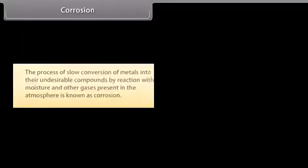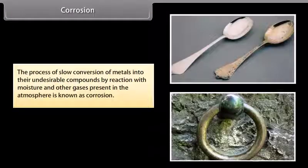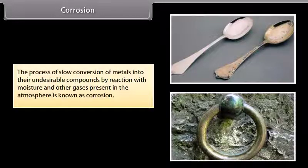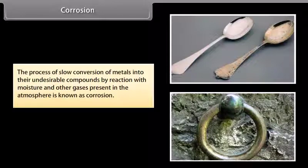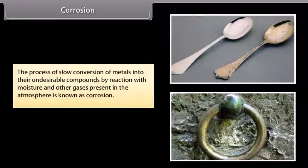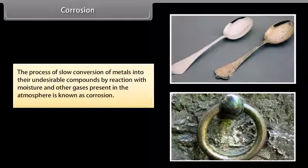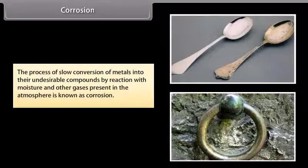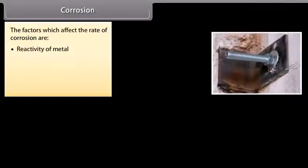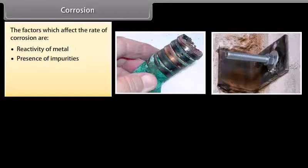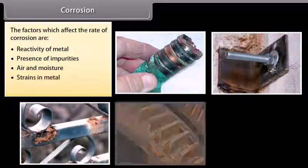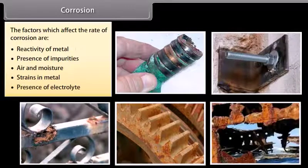Corrosion: The process of slow conversion of metals into their undesirable compounds by reaction with moisture and other gases present in the atmosphere is known as corrosion. For example, silver gets tarnished, iron rusts, copper develops green coating on its surface, and lead loses its luster. The factors which affect the rate of corrosion are reactivity of metal, presence of impurities, air and moisture, strains in metal, and presence of electrolyte.